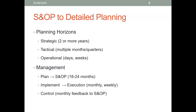From the sales and operations plan, you get a plan for the next 18 months or so. But for the immediate future — the next one or two months — you need a much more detailed plan at the daily and weekly level. Today's presentation is about how you go from a sales and operations plan to an operational plan at the daily and weekly level.